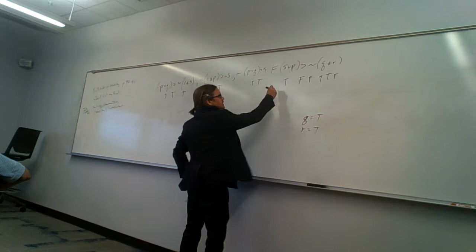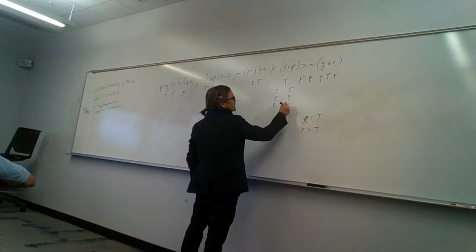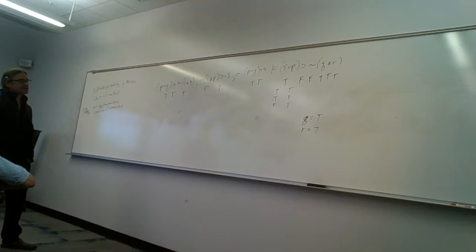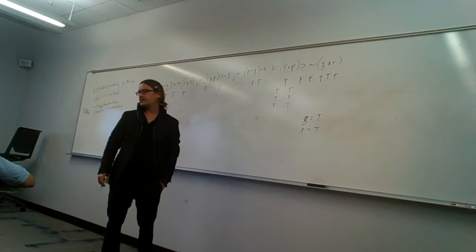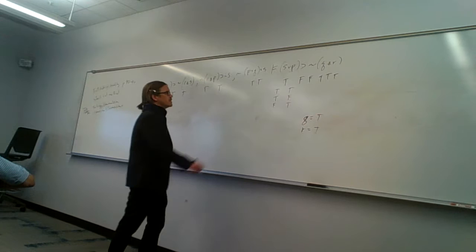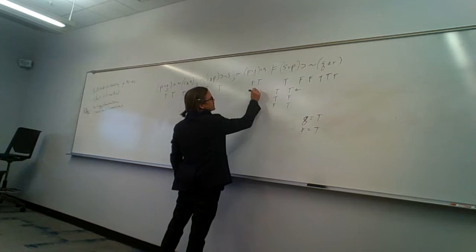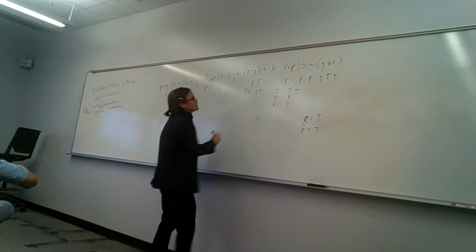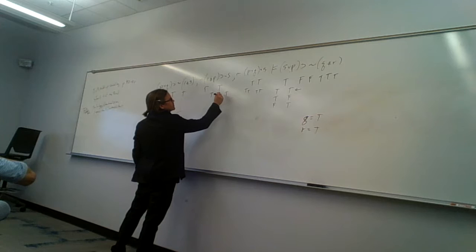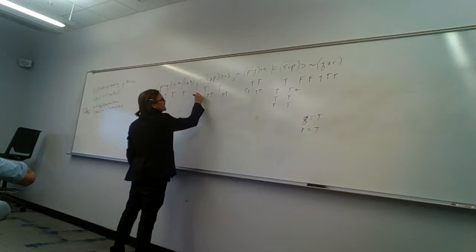Since S-or-P must be true, there are three possibilities: S and P both true, S true and P false, or S false and P true. We'll need to explore all three. Let's start with possibility A: S and P both true. If S is true and P is true, then both disjuncts in the first premise's antecedent are true, and the or is true. But then not-S is false, and true-and-false is false — so the horseshoe there is true. So far no contradiction.